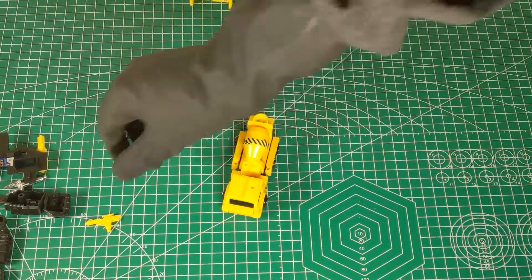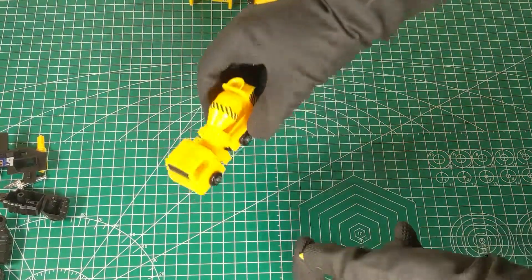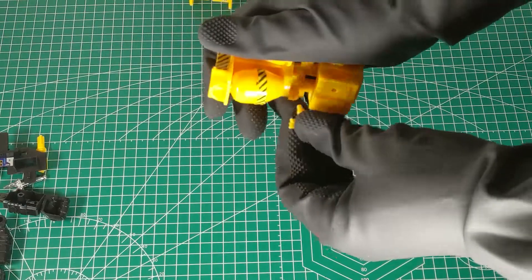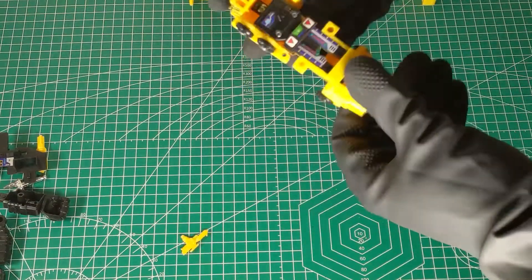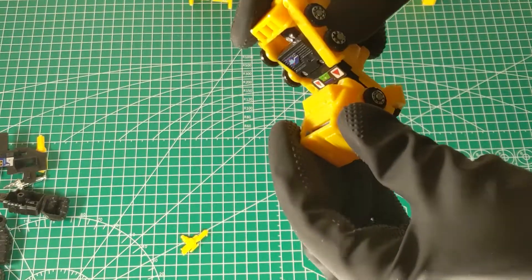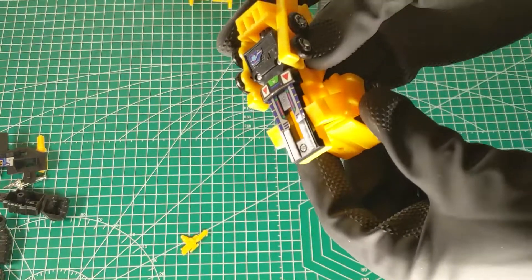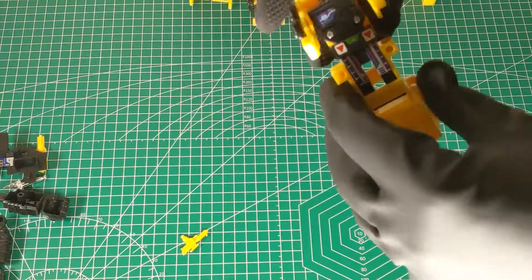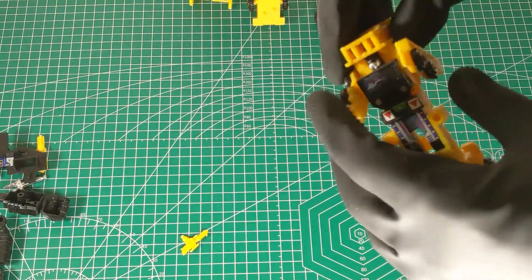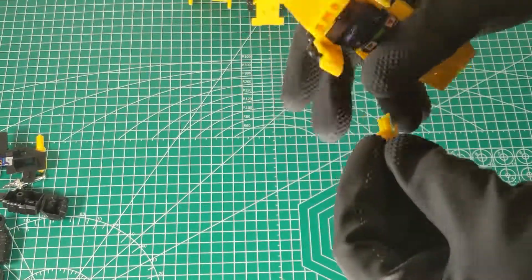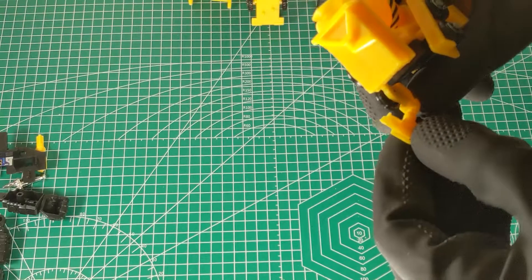And now we have Mix Master. And this blaster will go into Mix Master's top there. Fit into all his ports just fine. His single leg is kind of flimsy. But so, one foot. Doesn't really do much. His hands just fold out. He will hold the blaster though.